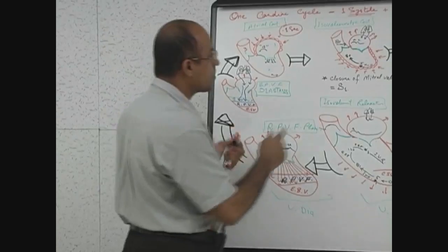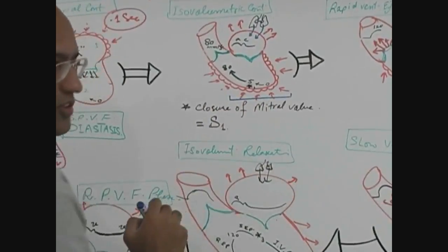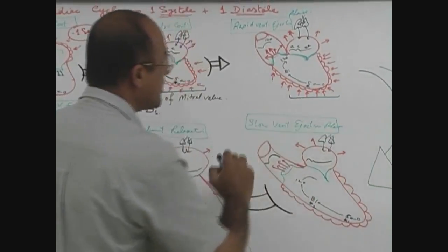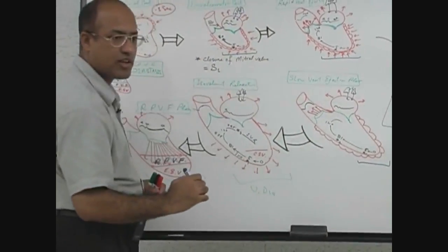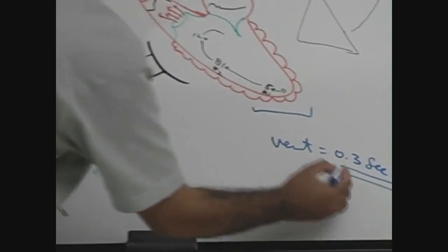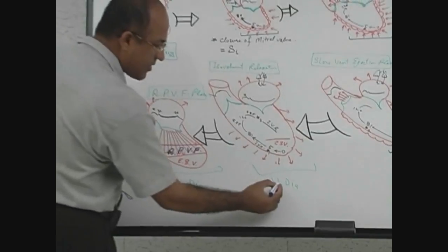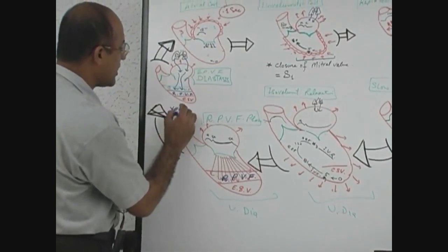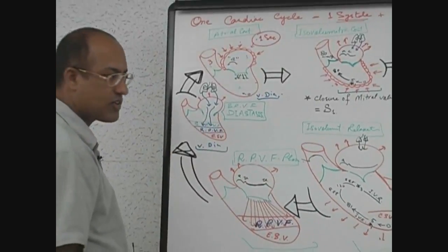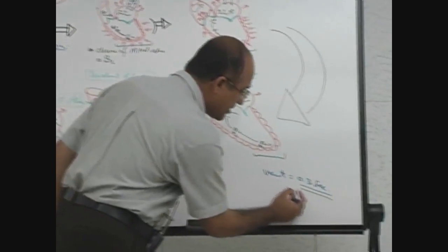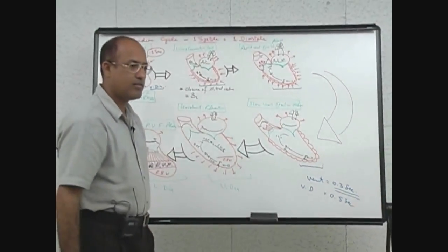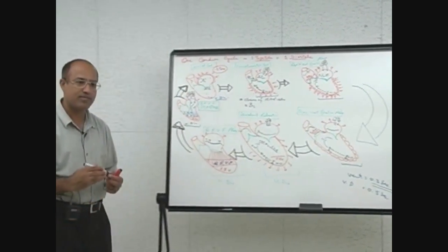When we superimpose the concept of ventricular systole and diastole: ventricular systole included isovolumetric contraction, the rapid ejection phase, and the slow ejection phase — total ventricular systole is about 0.3 seconds, which is longer than atrial systole. Ventricular diastole is about 0.5 seconds. Because both together should make 0.8 seconds when your heart rate is around 72 beats per minute.